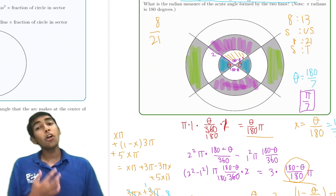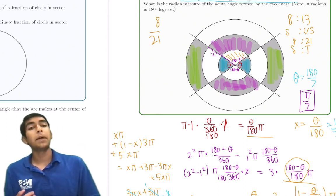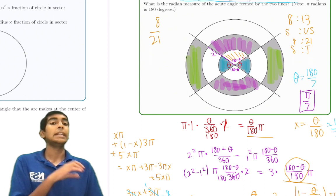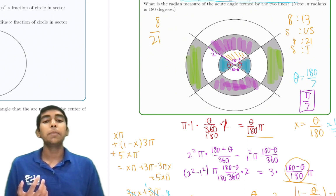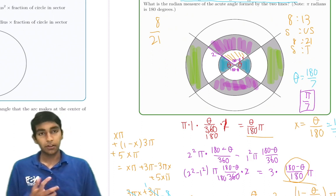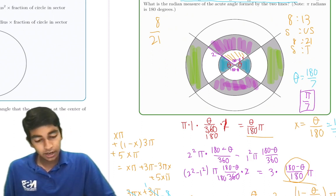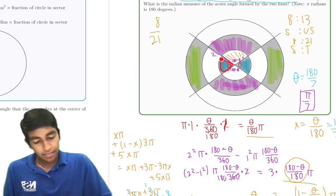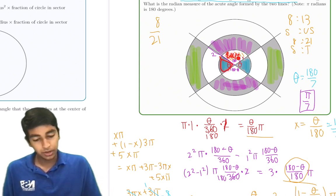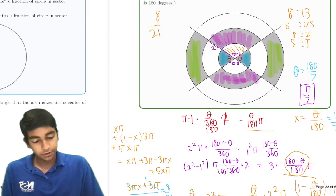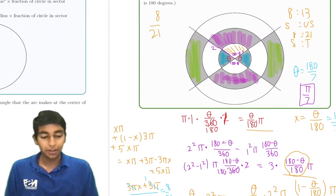We could have also solved this problem by letting the angle be in radians from the start, but that would be a little confusing if you're not familiar with radians. The key idea was summing all these regions and subtracting off the inside part, using our circle area formulas.